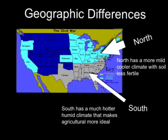The geographic differences for the North and South: the North has a more mild and cooler climate with less fertile soil, highlighted in turquoise, while the South is highlighted in gray and is much hotter and humid, with more fertile soil and many plantations.